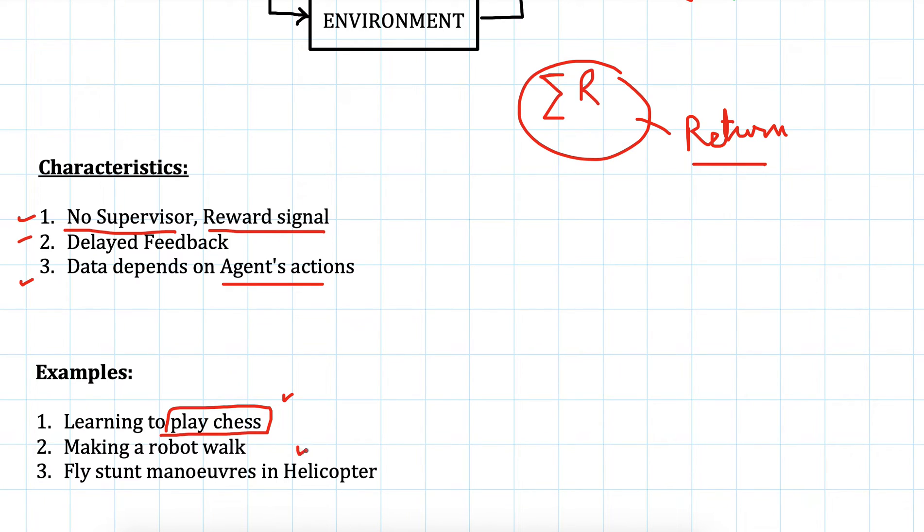Another example would be making a robot walk. It will walk, it will tumble, it will fall down, it will learn from its mistake, it will again try to maximize its rewards and ultimately the robot should be able to walk.